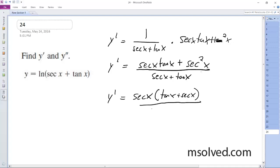Hold on. Here's some trickery. This actually simplifies down to just secant of x. So then y double prime is going to be equal to secant x tangent x. That's it.